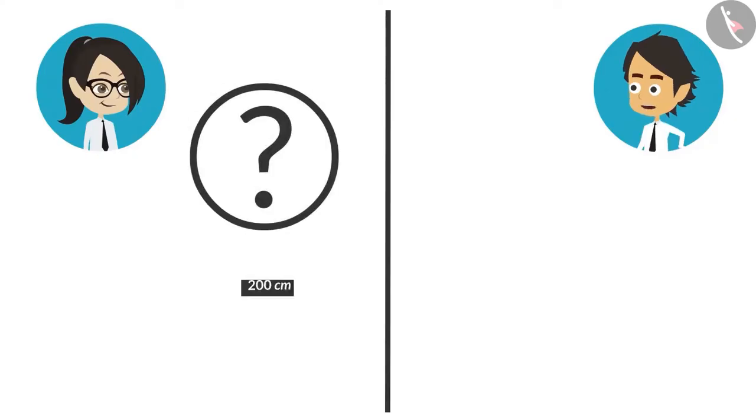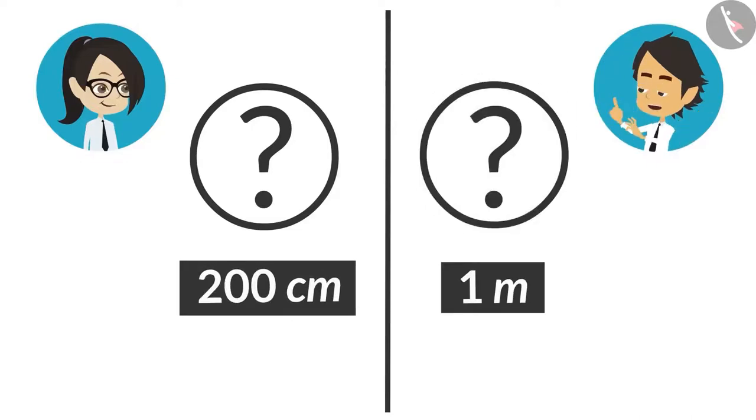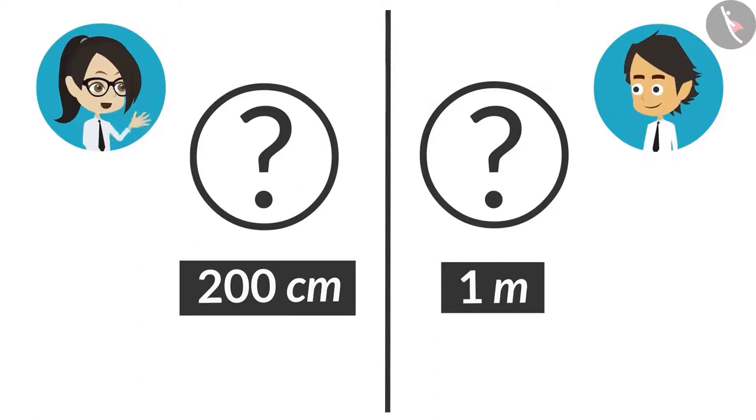The length of an object is 200 centimeters and the length of the second object is 1 meter. Tell me which one among them is longer? What is there to think here? The object with 1 meter length is bigger.